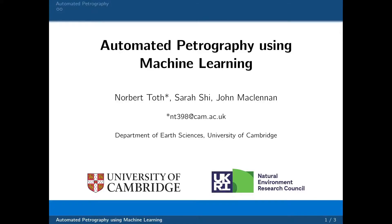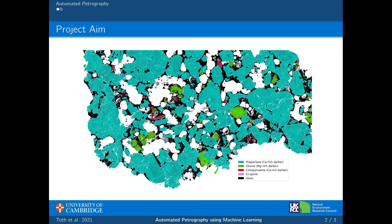Hello everyone, my name is Norbert Tort and welcome to this short talk about our work on automated petrography using machine learning. The core aim of our work is to develop a flexible and mostly automated method to take SEM data and produce images, as shown here. We took elemental maps of this whole thin section specimen and with our new method we were able to segment out the different mineral phases present, therefore effectively digitising the thin section itself.